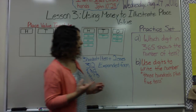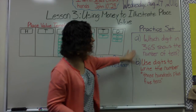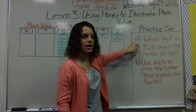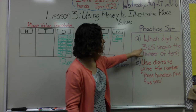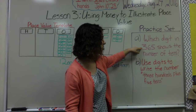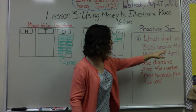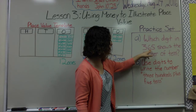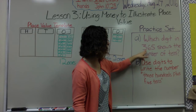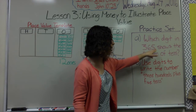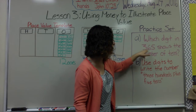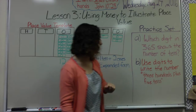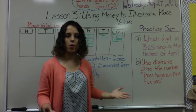Problem A says: which digit in 365 shows the number of tens? You just need to find which digit represents how many tens you have — is it the 3, 6, or 5? So you just write one digit.